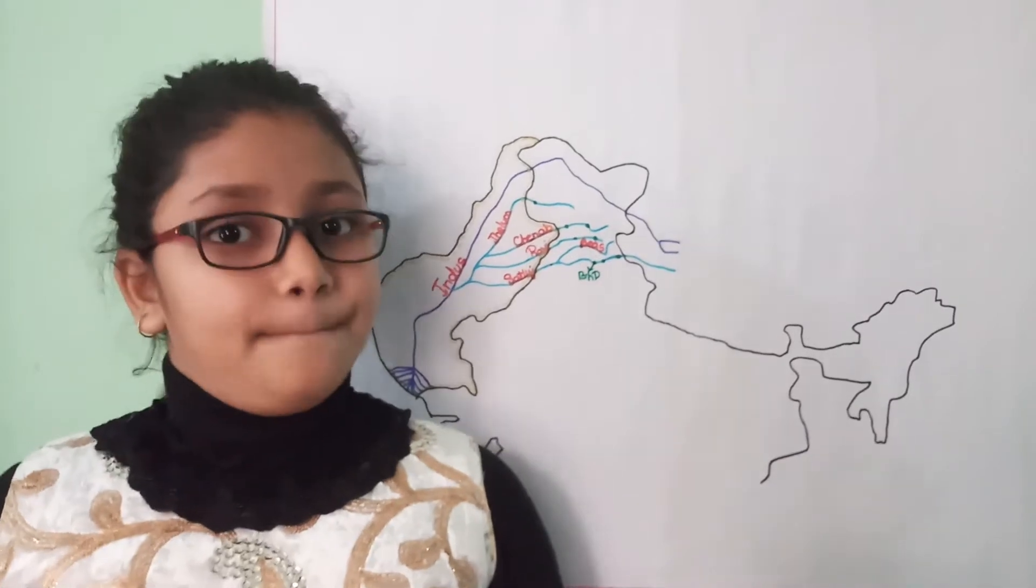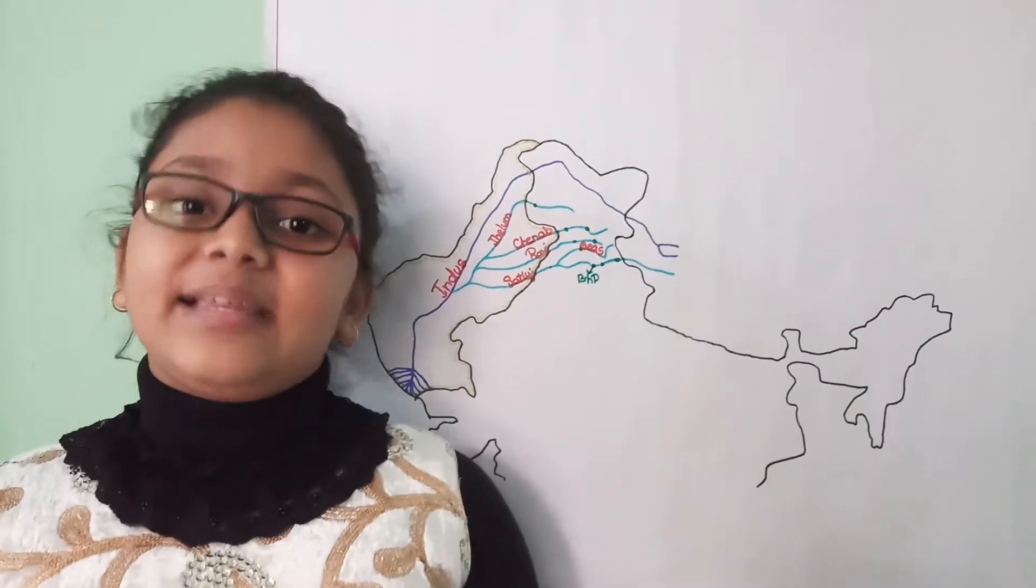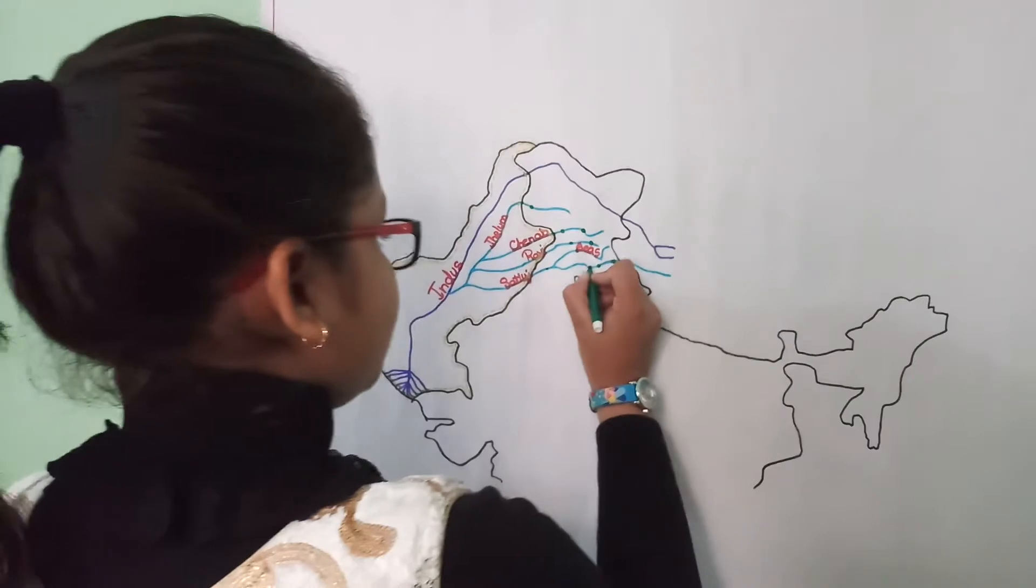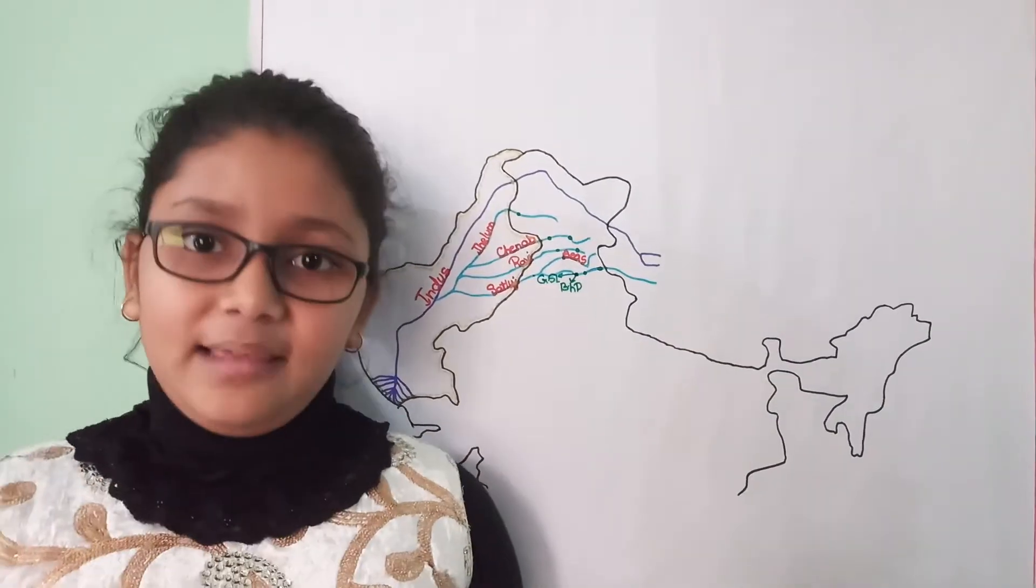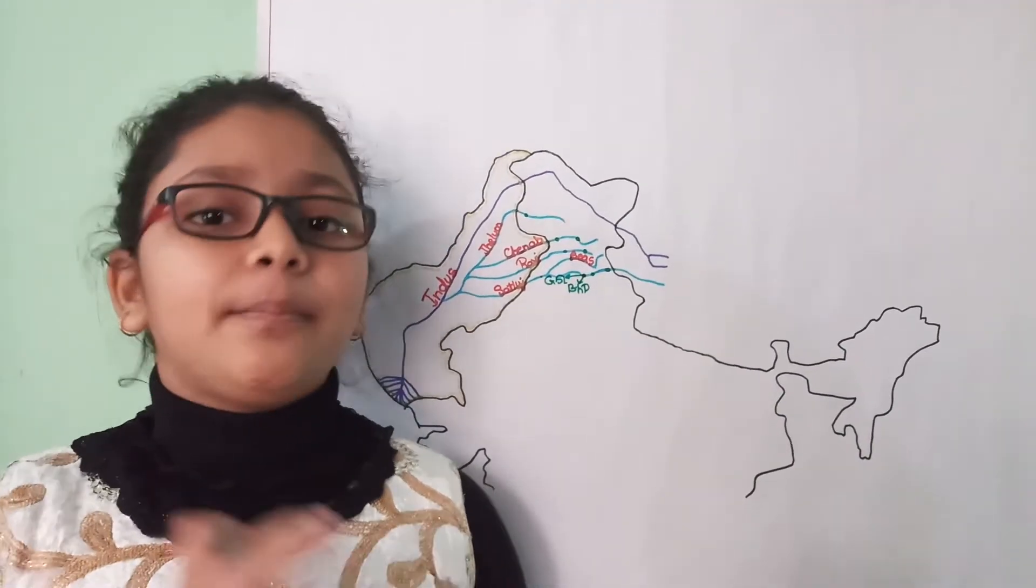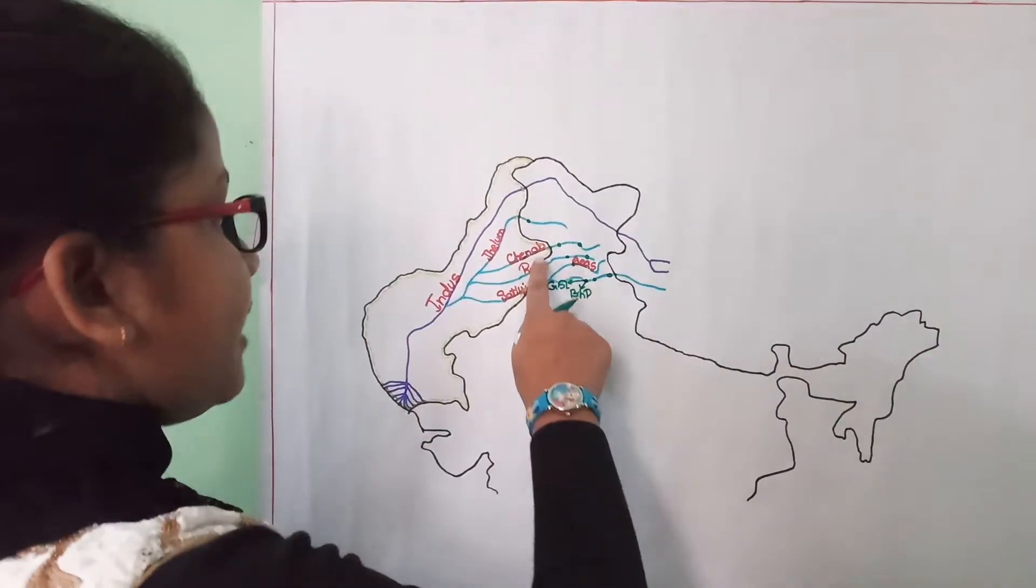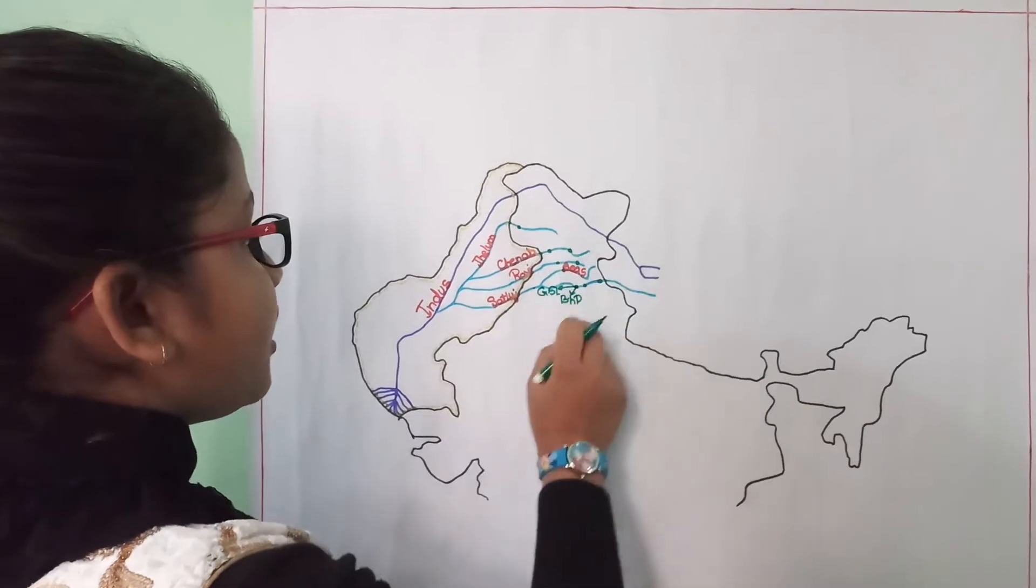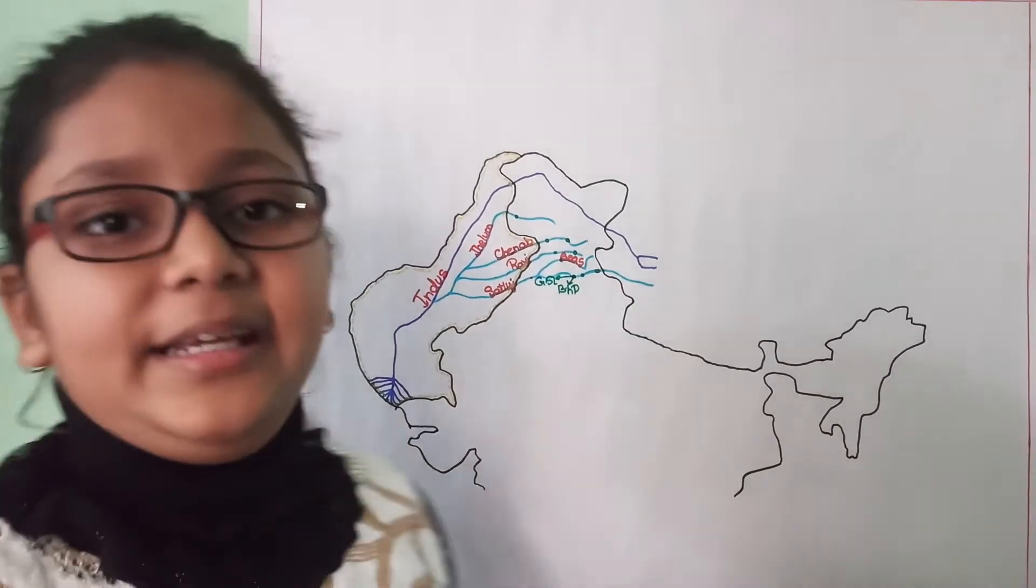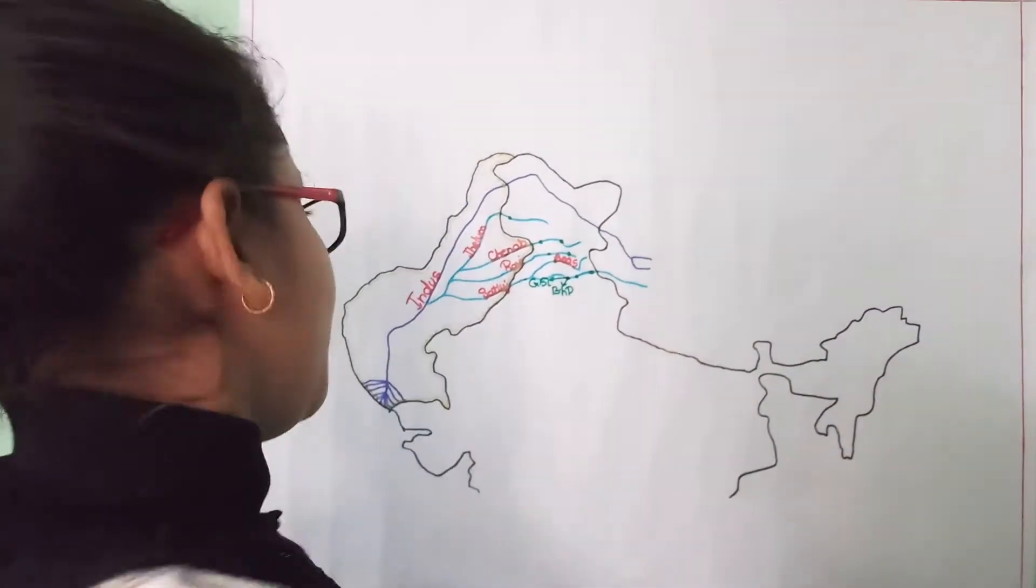It is the second largest dam in the world, as it is 226 meters high and 518 meters long. There are two dams built at Bhakra and Nangal. Its total power capacity is 1325 MW, which is distributed in the states of Punjab, Rajasthan, Chandigarh, Haryana, Delhi, and Himachal Pradesh.